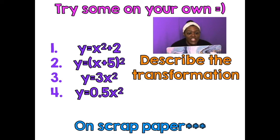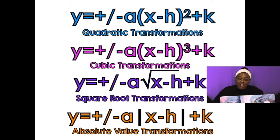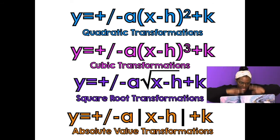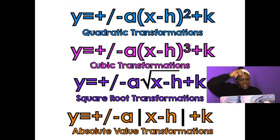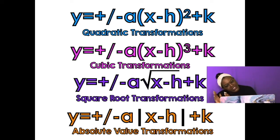These are the equations of the pair functions that we will be doing in this lesson. We already did quadratics — you know what the plus or minus does: reflection. A either makes it tall, skinny, or wide. H value moves left and right. K value moves up and down.